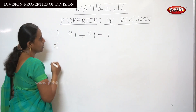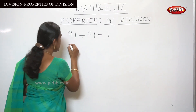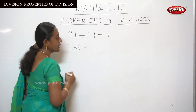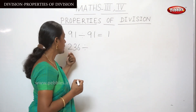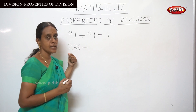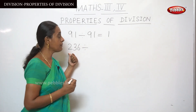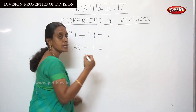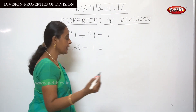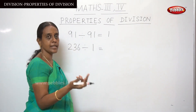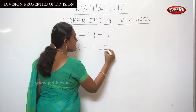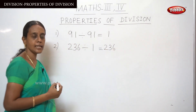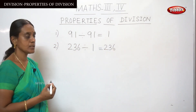The second property: if a number — for example 236, which is the dividend — is divided by one, the answer will be the same dividend number. That is, the answer will be 236.